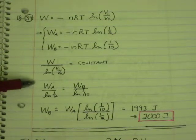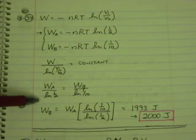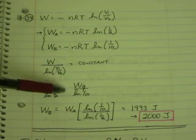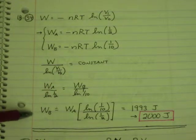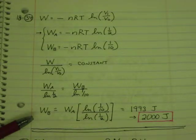So I leave nR and T over to the right, and the negative as well, and get the natural log of the ratio of the volumes over to the left. So what I've got is work over natural log of V1 over V0 equals constant. So now we compare that between A and B. So the work of A over natural log of 1 half equals the work of B over natural log of 1 tenth. So here we have the ratio work in case B is work in case A times natural log of 1 tenth divided by natural log of 1 half, and you should get 1,993 joules, rounding to 2,000 joules.